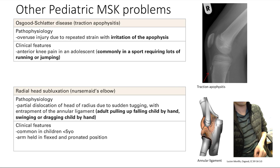This is very common in kids less than five years old. Think about swinging your little five-year-old nephew, niece, or cousin around — the radius pops out and the annular ligament goes in. You'll see their hand in a flexed and pronated position; the elbow is flexed and pronated. That's it for our MSK section.